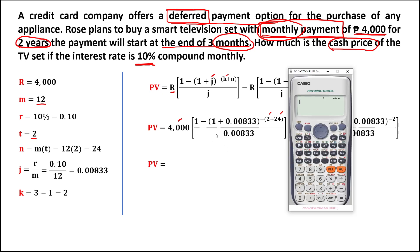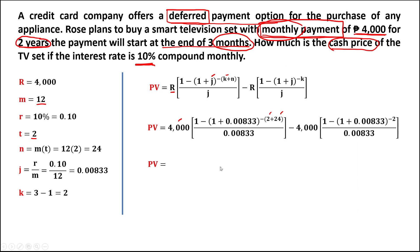To solve for the present value, first we solve the first group inside the parenthesis. We have 1 minus 1.00833 to the power of negative 26 (since 2 plus 24 equals 26), then divide by 0.00833, then multiply by the regular payment of 4,000. This equals 93,116.67.